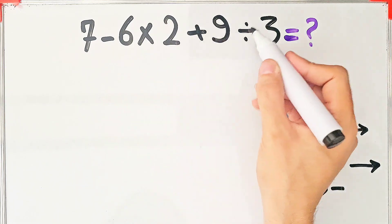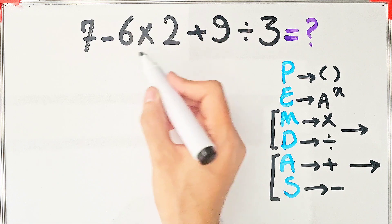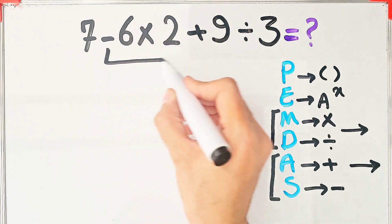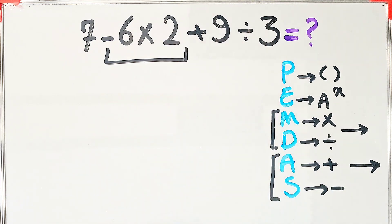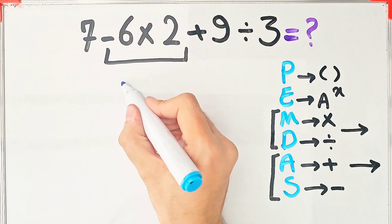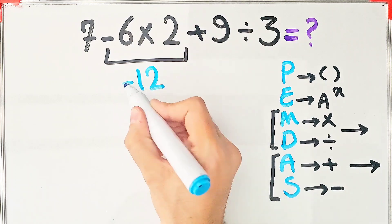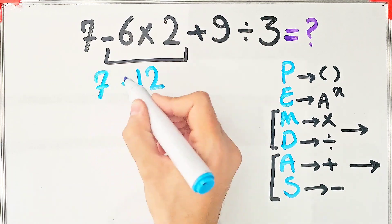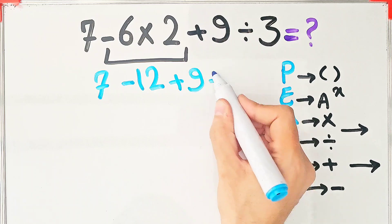We have subtraction, multiplication, addition and division. First, we do this multiplication. Negative 6 times 2 equals negative 12. Now we have 7 minus 12 plus 9 then divided by 3.